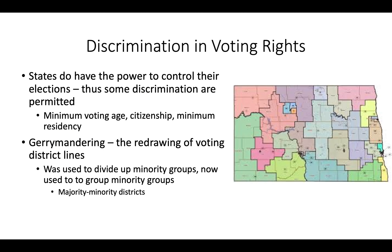Discrimination in voting rights: states do have the power to control their elections, so some discrimination is permitted. For example, minimum voting age — you must be 18. Citizenship — you must be a U.S. citizen. And minimum residency — I believe you have to live in your district for 30 days in order to vote there. Technically these are discriminations against 16-year-olds or non-citizens, but they are our legal requirements.